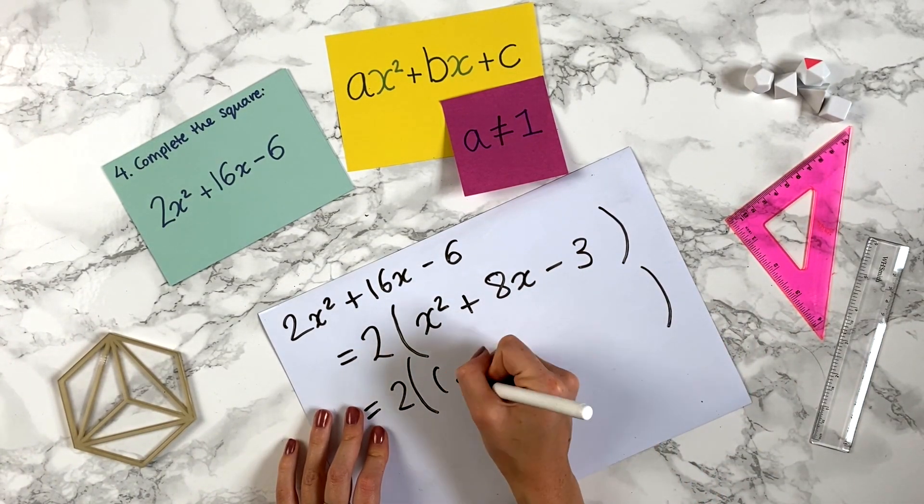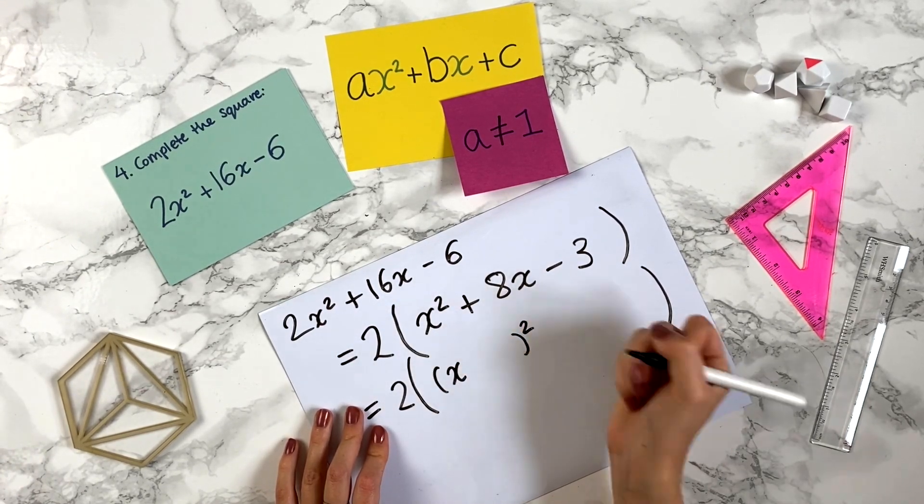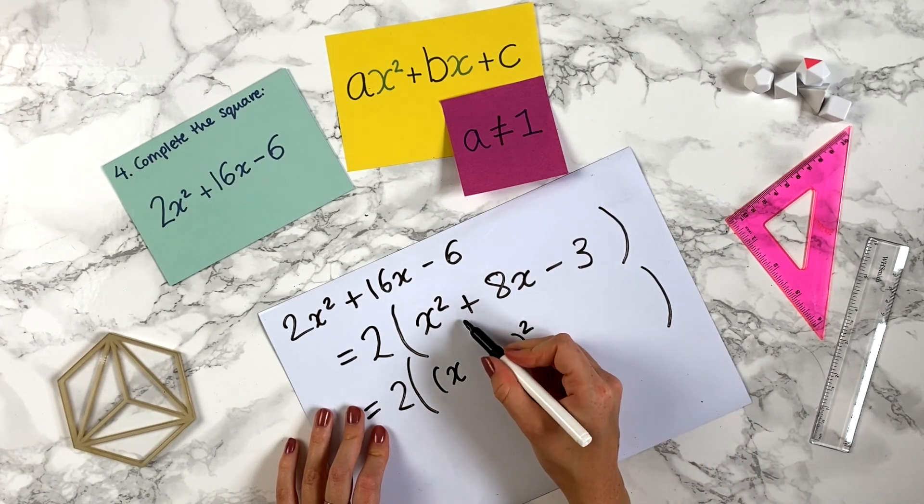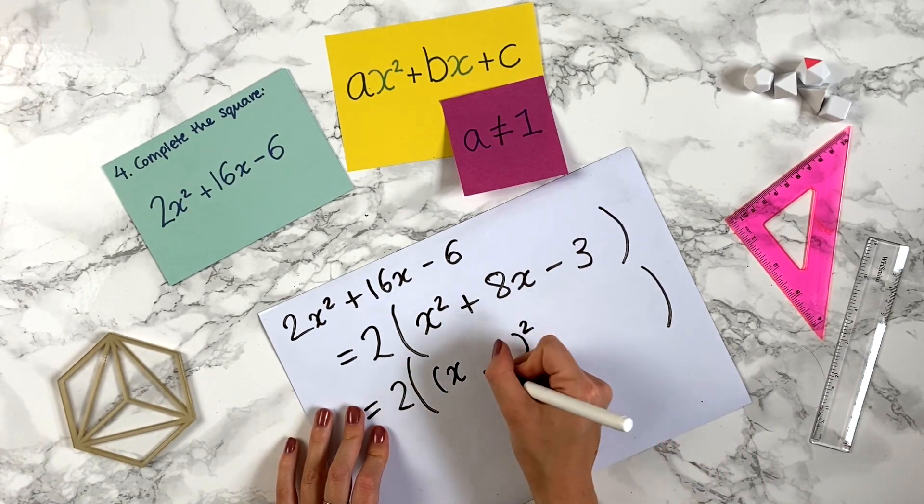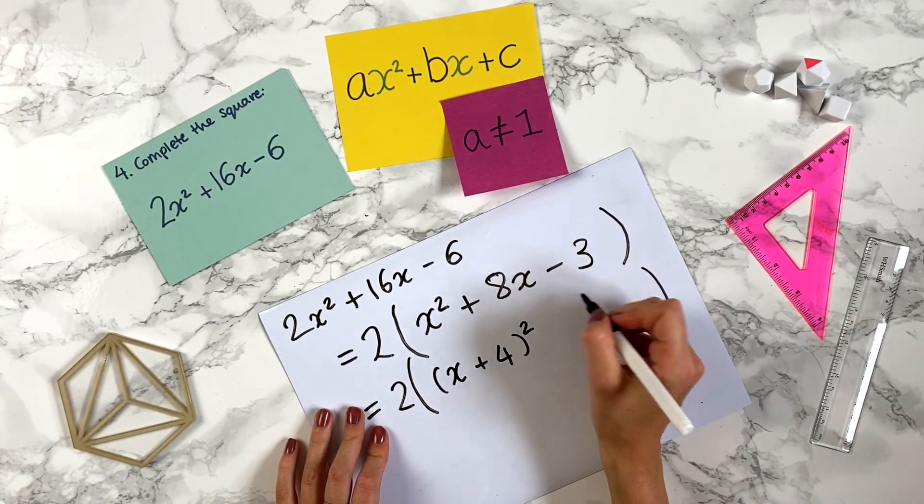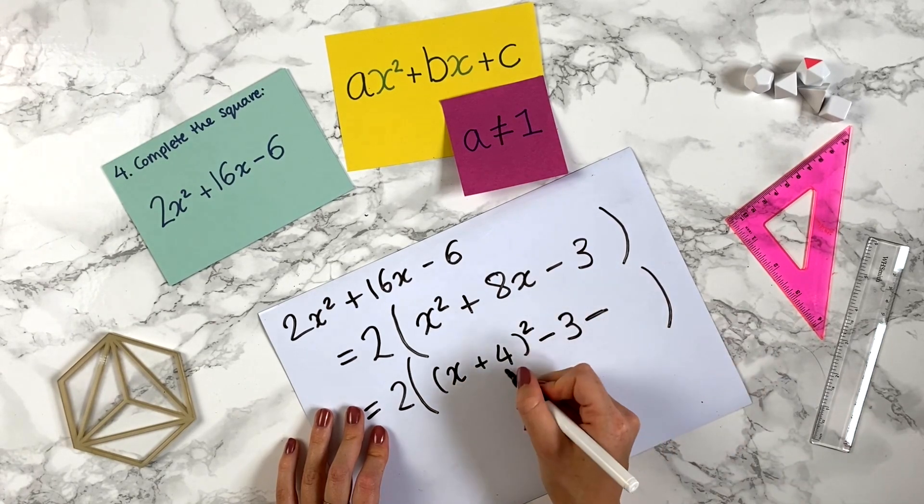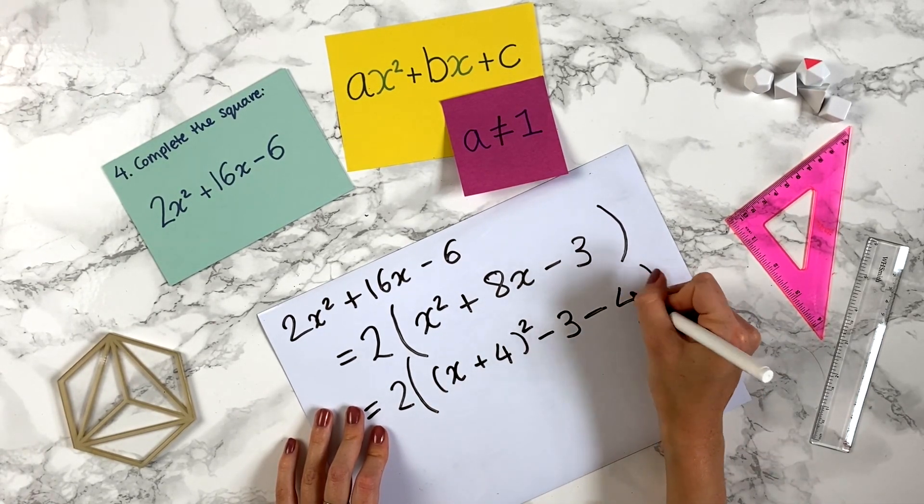So this gives us x, so we do our usual bracket x close bracket squared. We put half of this term in front of the x so that's plus 4. We chuck on the bit at the end that's minus 3, and then we minus this number squared so minus 4 squared.